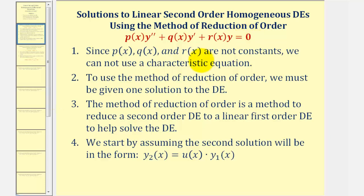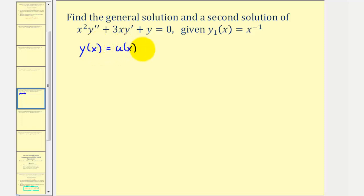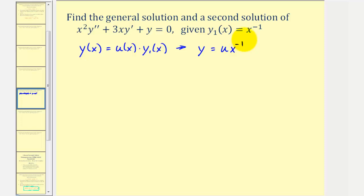Let's take a look at our second example. First notice how the given differential equation fits the required form, and we're given one solution. So we'll start by assuming that y sub two of x, or just y of x, is equal to some function u of x times the given solution y one of x, which means we're going to let y be equal to u times x to the power of negative one.